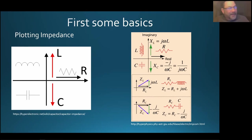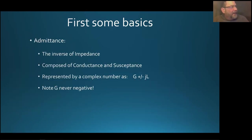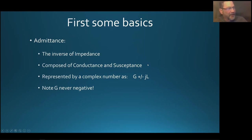I'm showing all this because it seems a little overwhelming, but hopefully when we get through this introduction you're going to see how the Smith chart simplifies all this quite a bit. One other thing to note: the inverse of impedance is something called admittance. Just like impedance is composed of resistance and reactance, admittance is composed of conductance and susceptance. It's represented as a complex number: G plus or minus JB.